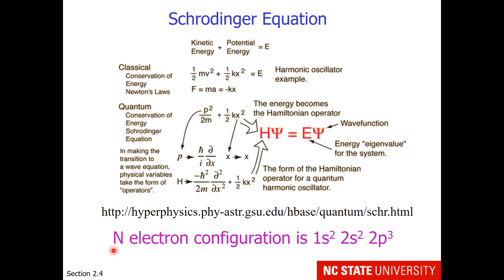And hopefully some of you in this class already realize that the electron configuration of nitrogen is 1s², 2s², 2p³. That is where I'm heading.